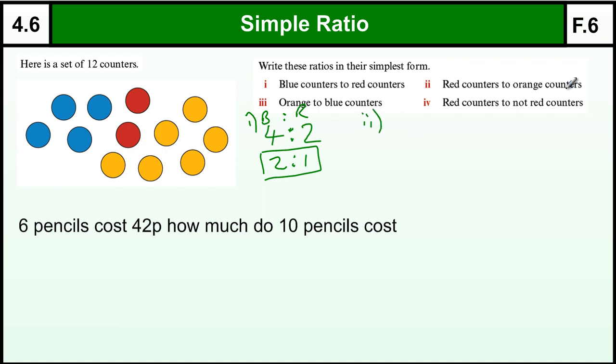Next we've got red counters to orange counters. So red to orange. Now it's very important in ratio that we actually get the order correct. So we must make sure we're doing the red first, which is 2. And the orange 1, 2, 3, 4, 5, 6. And again we can half that to get a simplest form of 1 to 3.